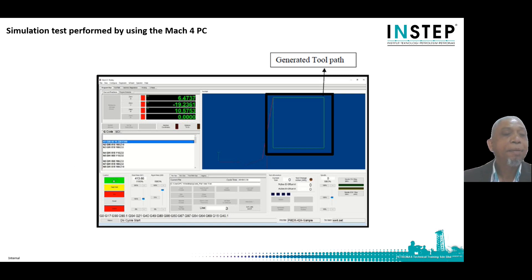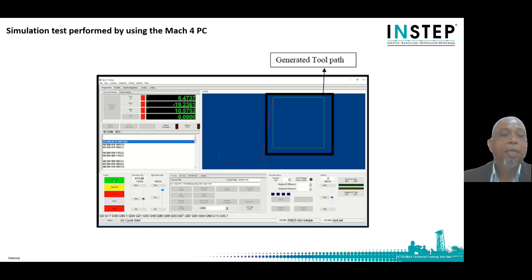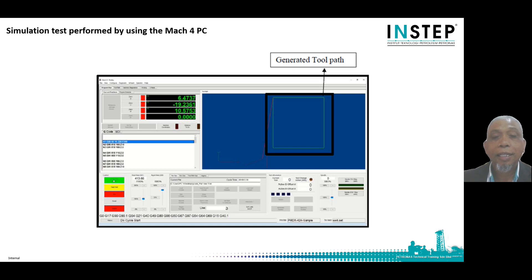Using an end milling machine, the machining process involves the milling procedure. The shape of milling is a simple square island with a depth of 10 millimeters. The output of the simulation testing — the generated tool paths — can be seen in this slide.